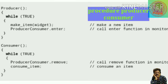The producer function, within a loop, makes an item and calls producer-consumer dot enter, which calls the enter function in the monitor. In the case of the consumer, it calls producer-consumer dot remove, which calls the remove function in the monitor, and then consumes the item. So a monitor is essentially a programming concept and structure by which we can synchronize processes.